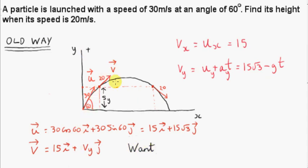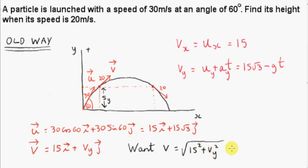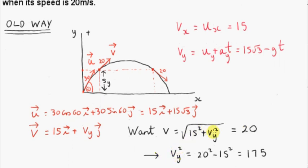What we want is for the final speed — that's the magnitude of v — to equal 20. To get the magnitude of this vector, we square its components, sum them, and take the square root. We want this to equal 20. From this, we can work out what vy is — the y component of the velocity vector when its magnitude is 20.